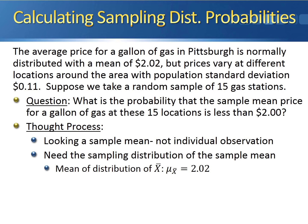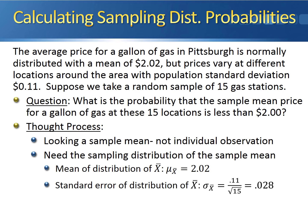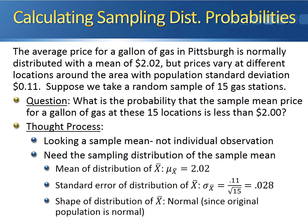Based on the properties we discussed earlier, we know that the mean of the distribution of x-bar is the same as the mean of the original population: $2.02. We also know that the standard error of the distribution of x-bar is equal to the population standard deviation, $0.11, divided by the square root of the sample size, 15. That gives us 0.028. The most important part is the shape — if the shape isn't normal, we can't calculate probabilities. Luckily, the original population of gas prices was normally distributed, so even though our sample size is less than 30, the shape of the sample mean is also normal.